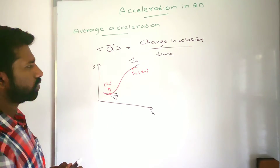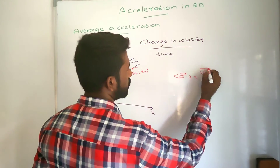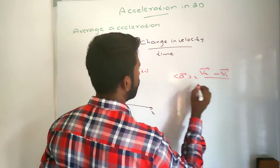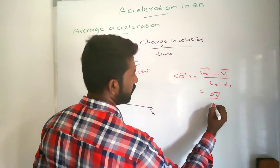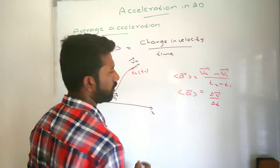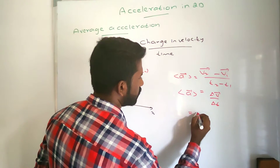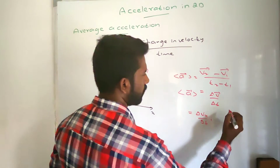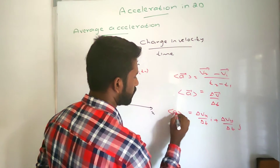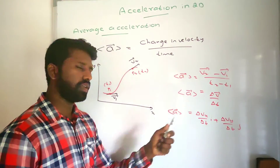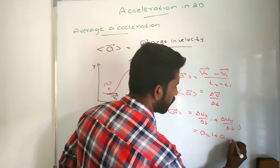The average acceleration is equal to the change in velocity — that is, final velocity vector V2 minus initial velocity vector V1 — divided by the change in time interval, t2 minus t1. This can be written as delta V divided by delta t. Since the change in velocity may have X and Y components, we can write this as: (delta Vx / delta t) i-hat plus (delta Vy / delta t) j-hat.